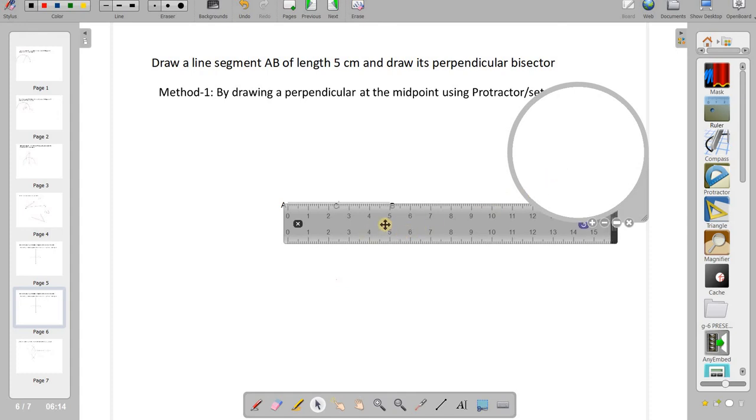Perpendicular bisector is the line segment from the midpoint of the line segment and perpendicular to it. It means that it is 90 degrees.